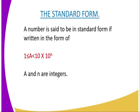We go to the standard form. A number is said to be in standard form if it is written in the form of: 1 less than or equal to A, less than 10, then you multiply by 10 to power n.